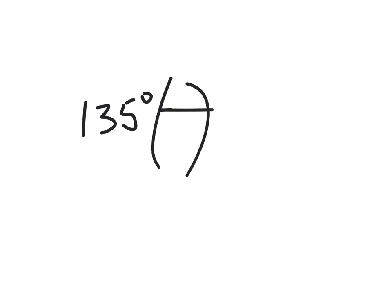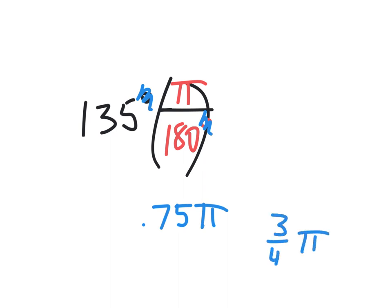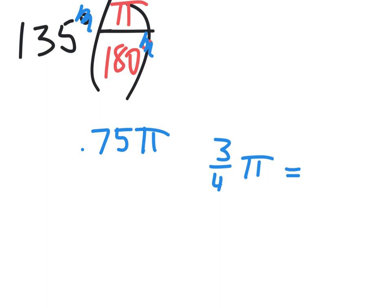So everybody, change 135 degrees into radians for me. Hint: you're going to multiply by something — it has to do with 180 and it has to do with pi, and you just got to put them in the right spots. Samuel, what do you think you're going to multiply by? Pi over 180. And why'd you put the 180 on the bottom? There was a degree, and it would cancel. You'd use your calculator: 135 divided by 180 gives 0.75, so that's three-fourths pi — three pi over four.